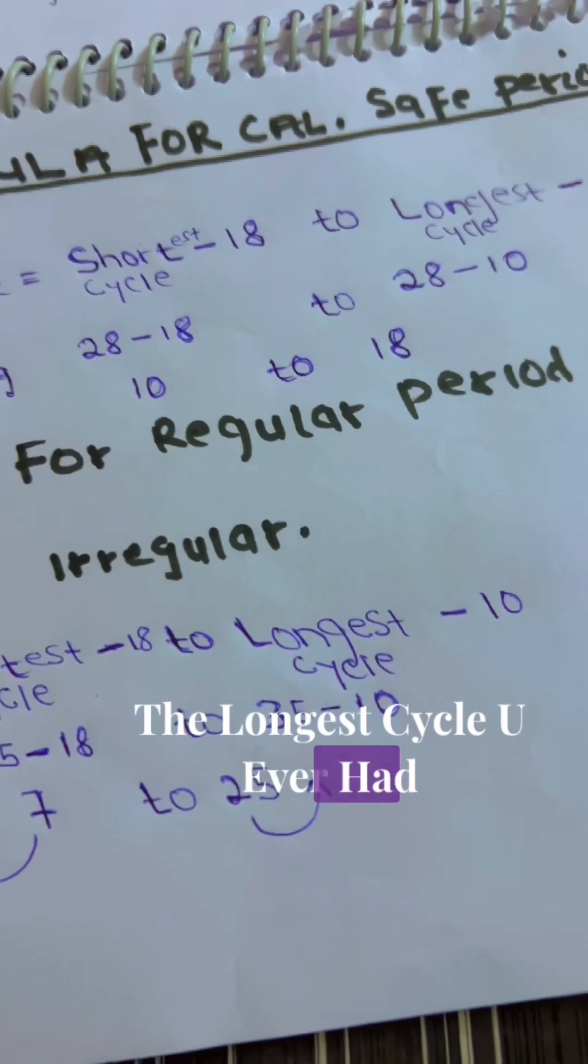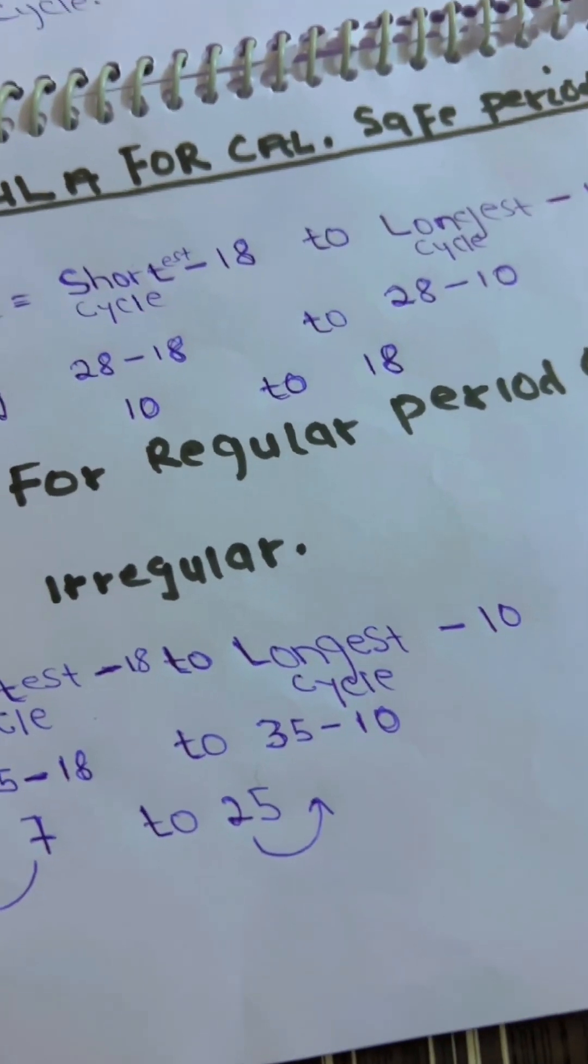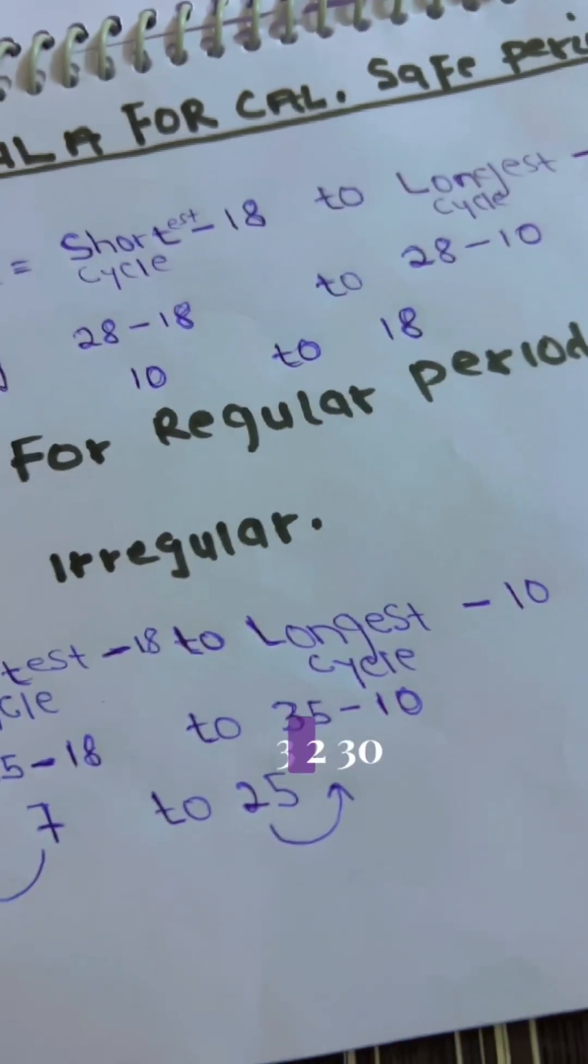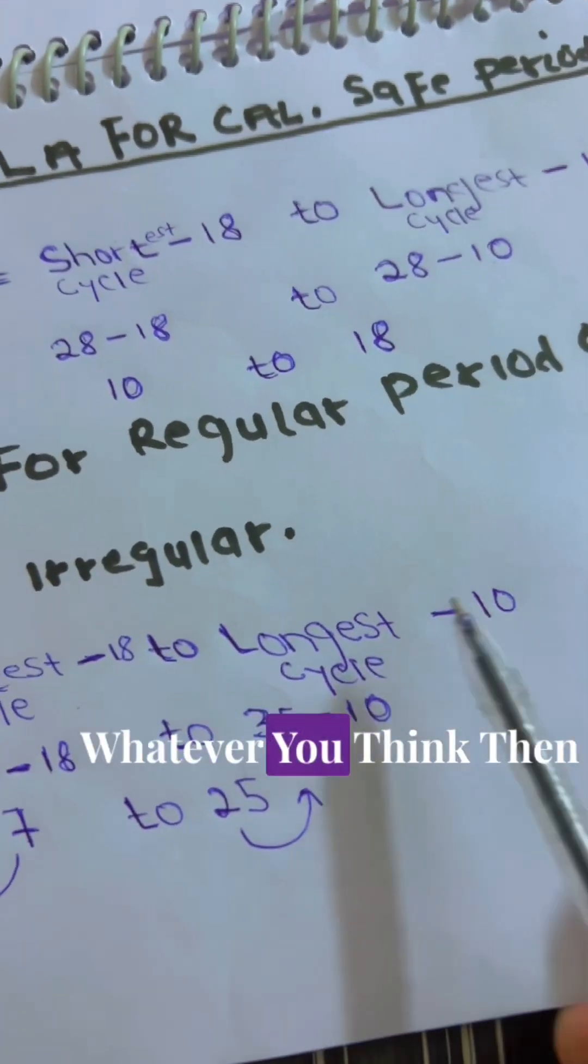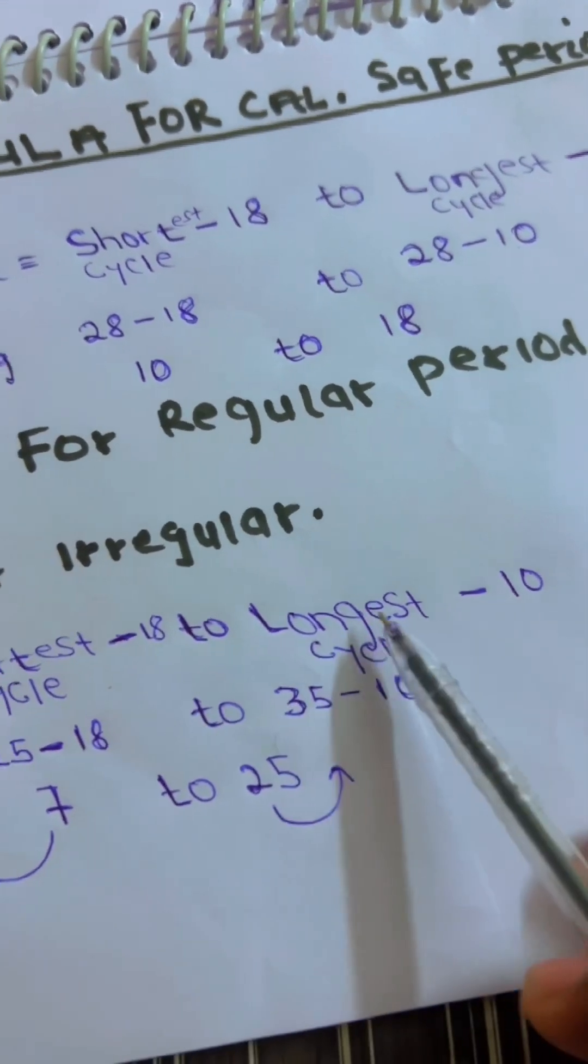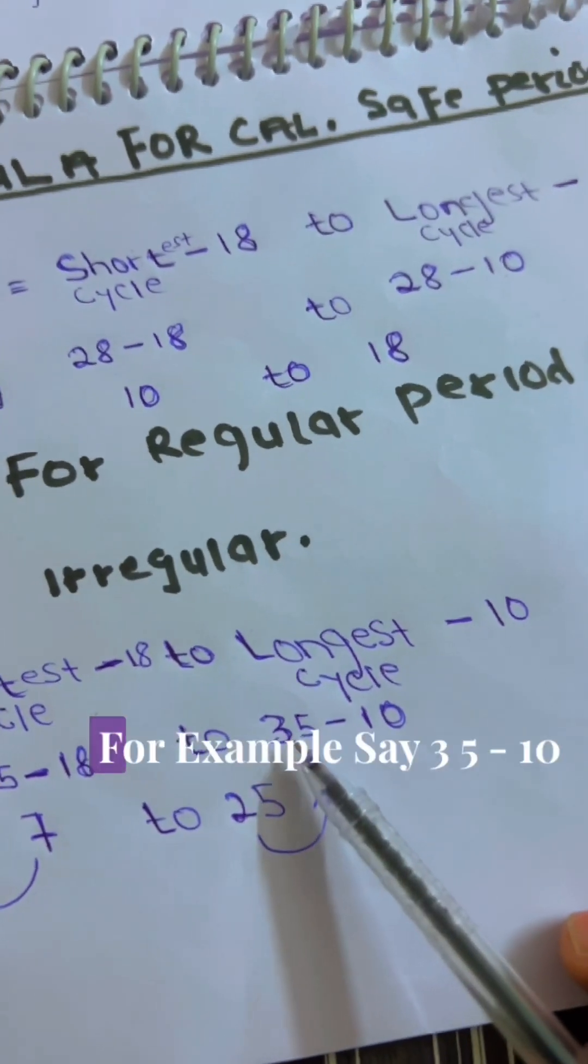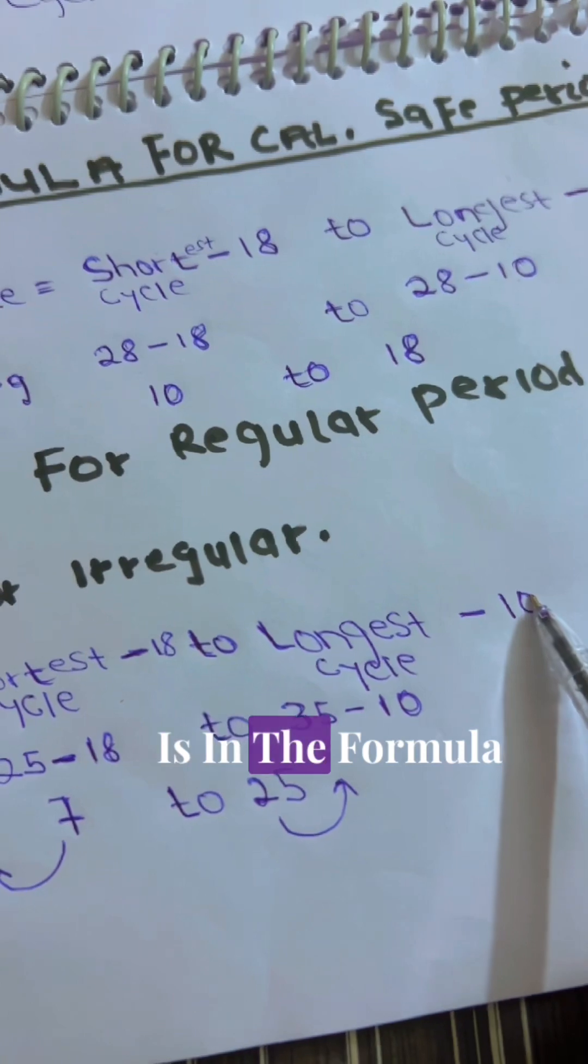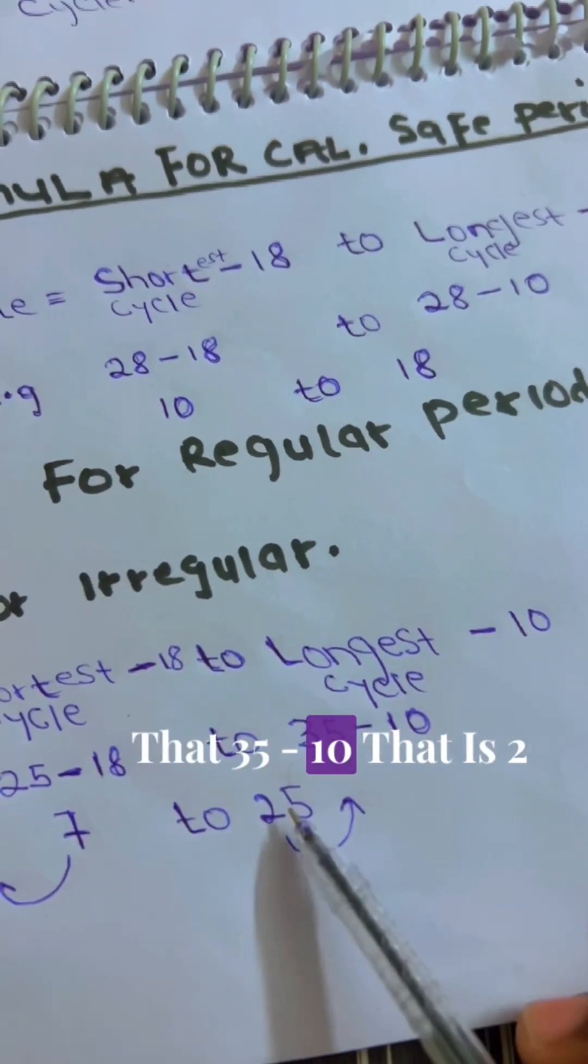Is it 30? Is it 35? Is it 32? 33? Whatever you think, then you write it here as your longest cycle. So, for example, let's say 35, 35 minus 10, 10 is in the formula, 35 minus 10, that is 25.